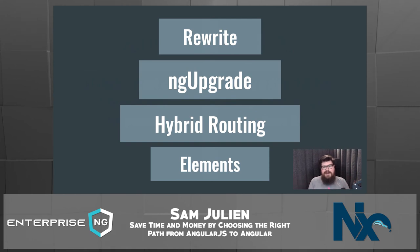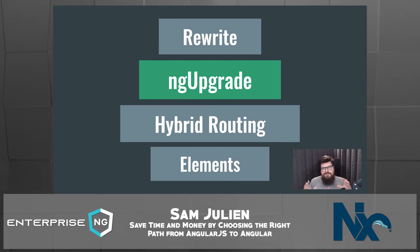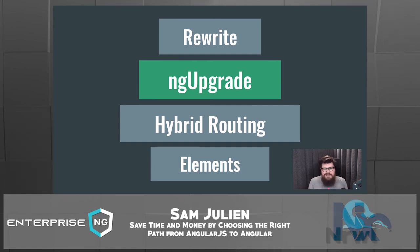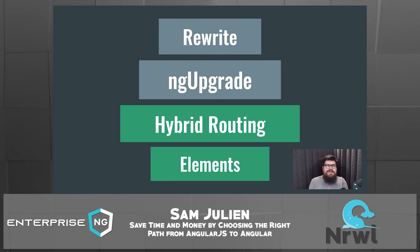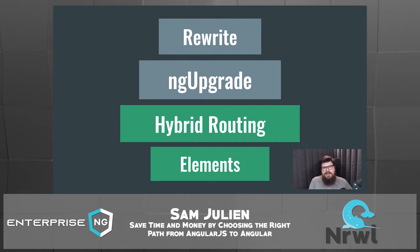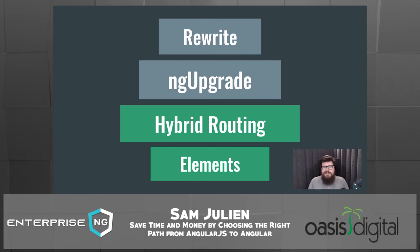Putting it all together, Noble Nonprofit is the sweet spot for ng upgrade — it works really well for mid-sized applications that aren't super complicated and are relatively modern. They can set up a hybrid app and gradually rewrite over perhaps six months to a year. Stable Insurance is not a great candidate for plain ng upgrade because of the complexity. It doesn't make sense for them to go back and modernize their AngularJS code — it would take too much time. They'd be better off doing a hybrid routing approach, either server-side or client-side, leaving the AngularJS code untouched and moving over piece by piece. They could also consider Angular Elements, especially if they have a lot of event-based code.